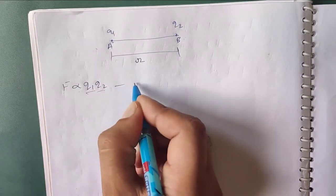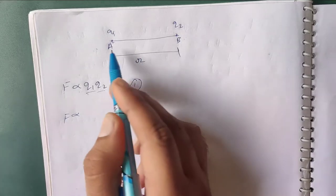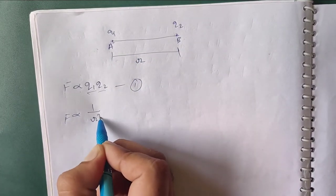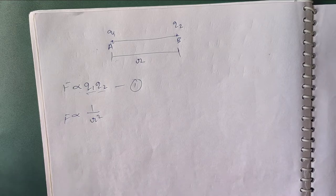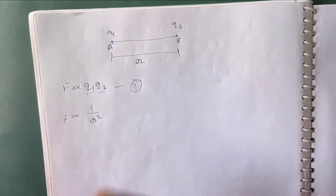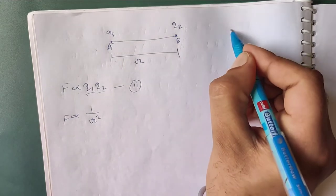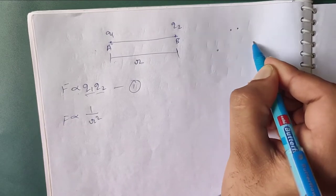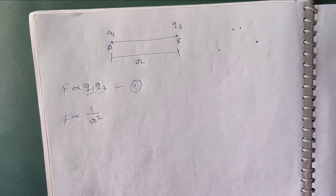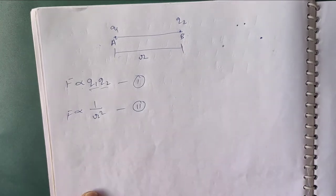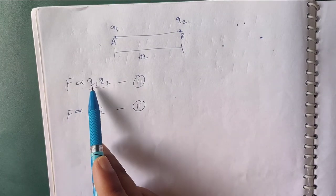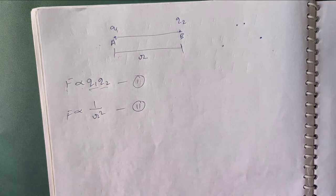The next observation is that the force between the two charges is inversely proportional to the square of the distance between them. We have considered the distance between the two charges as R. So the force is directly proportional to Q1×Q2 and inversely proportional to R square.